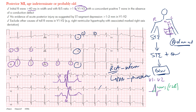Because we don't have posterior leads, we're looking for opposite changes in those precordial leads. If you imagine a Q wave followed by an R wave, the reflection of that would look like: the Q wave portion becomes an R wave, and the R wave portion becomes an S wave. So we're looking for those opposite changes in the right precordial leads.